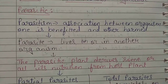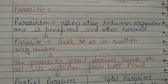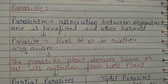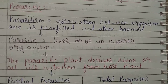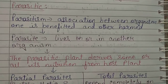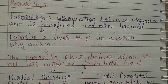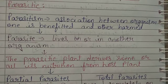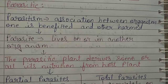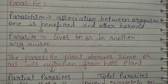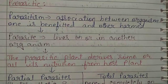The plants that show this phenomenon are known as parasitic plants. Parasites are those who live on or in another organism. In the association of parasitism, there are two organisms: the one which is benefited is known as the parasite, and the other which is harmed is known as the host. The parasitic plant derives some or all of its nutrition from the host plant.